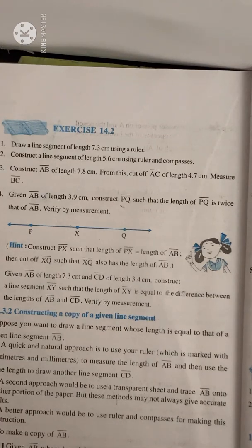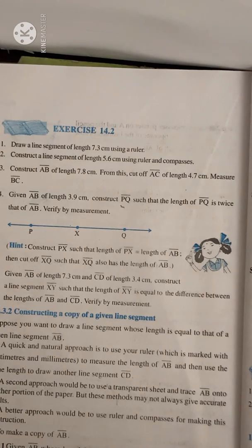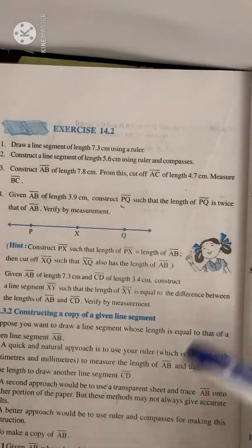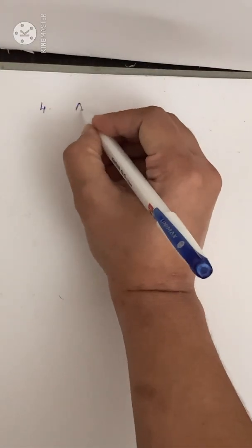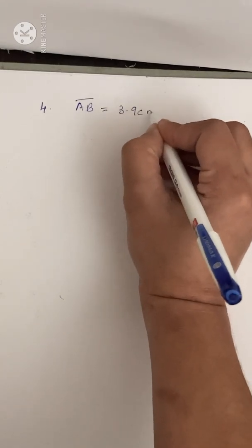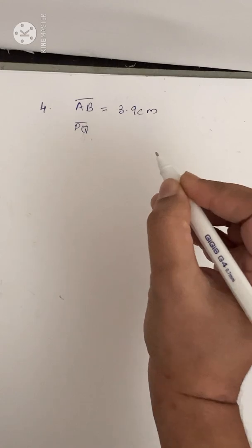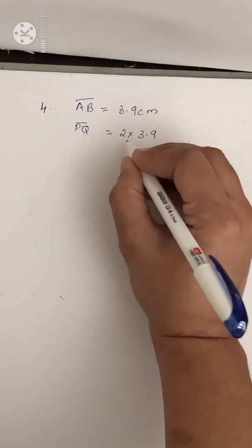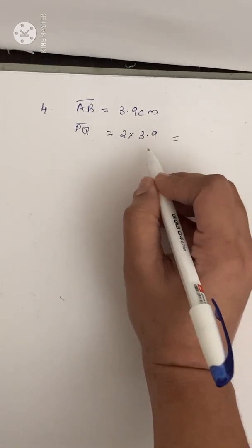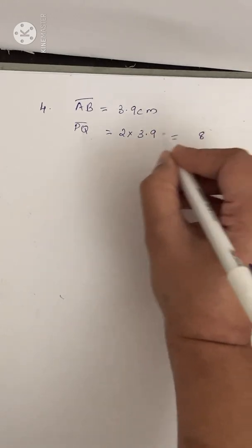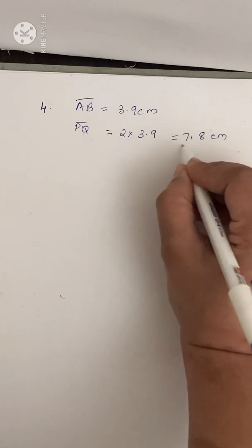Next let us do question number 4. Given AB of length 3.9 cm, construct PQ such that the length of PQ is twice that of AB. Verify by measurement. A hint is given — construct PX such that the length of PX equals the length of AB, then cut off XQ such that XQ also has the length of AB. So PQ is twice 3.9, which equals 7.8 cm.